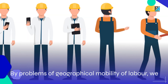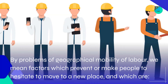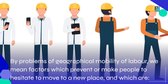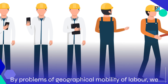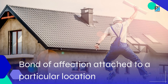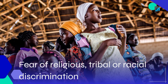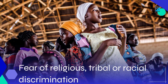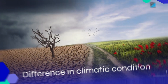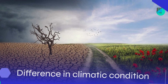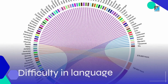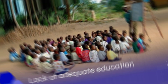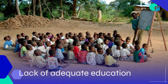By problems of geographical mobility of labor, we mean factors which prevent or make people hesitate to move to a new place. These factors include: bond of affection attached to a particular location; fear of religious, tribal, or racial discrimination; difference in climatic condition; difficulty in language; and lack of adequate education.